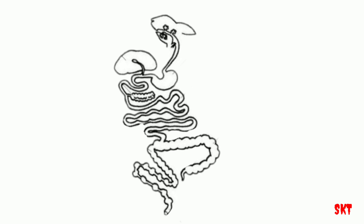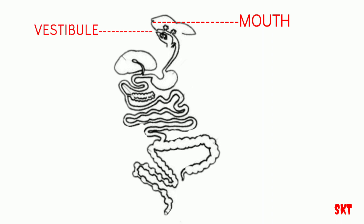As the rabbit eats food, it enters its mouth. The mouth is relatively small and present at the anterior end of the head. The mouth gives rise to the vestibule, which is a narrow space between lips and cheeks externally, and gums and teeth internally. The vestibule gives rise to the buccal cavity which possesses the tongue and teeth, and it gives rise to the pharynx. The vestibule contains mucous glands.